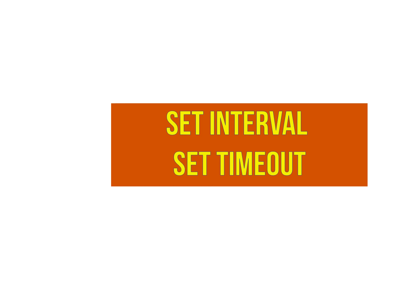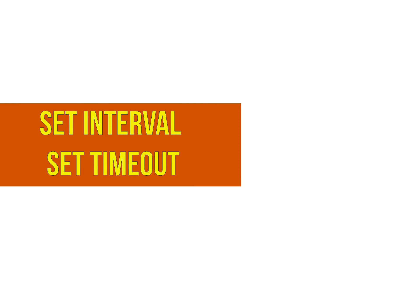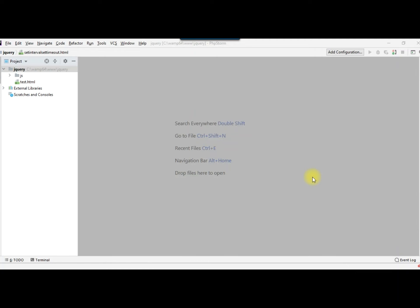Both are called after some delay or interval of time. But with setInterval, the function keeps on calling repeatedly after the time delay. While with setTimeout, the function is called after a certain time delay only once. That is the basic difference between setInterval and setTimeout.